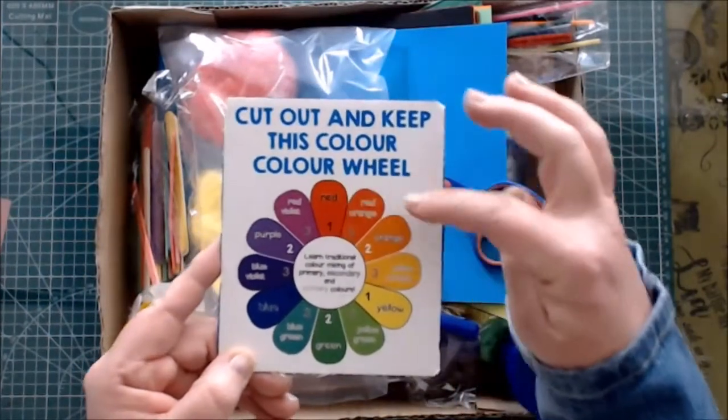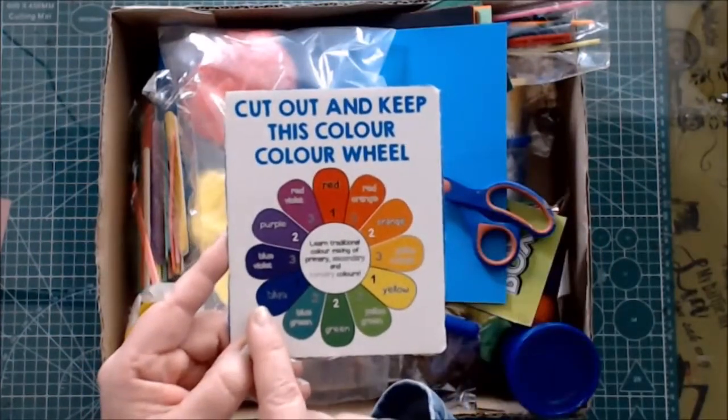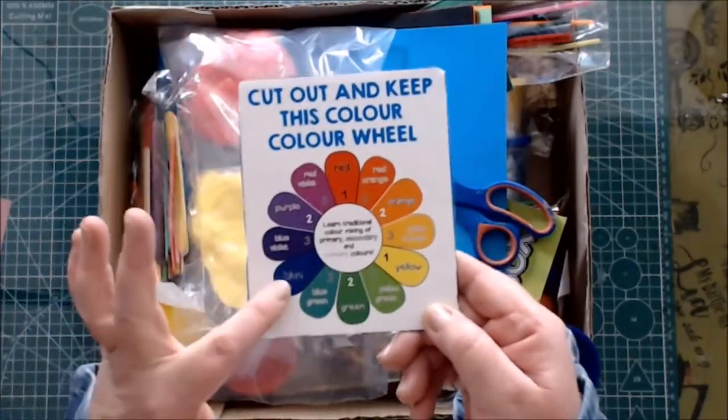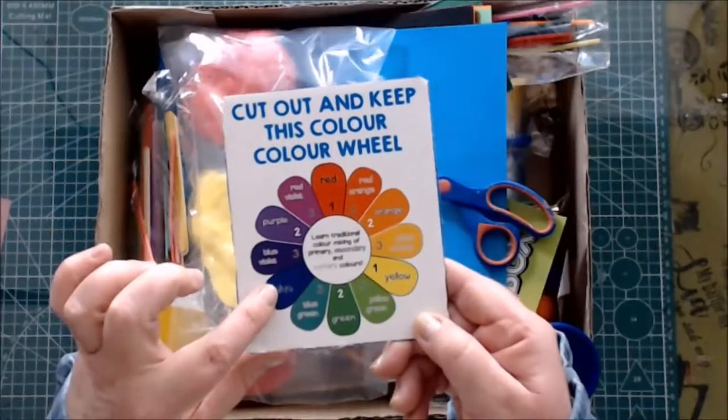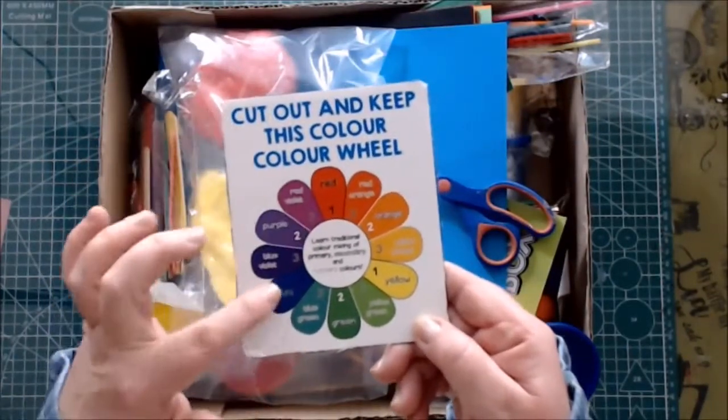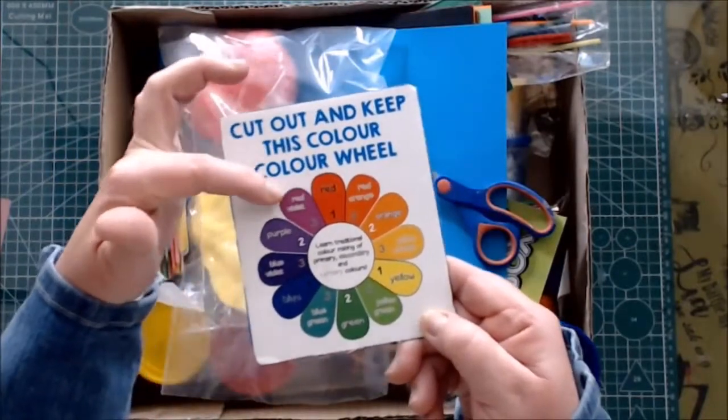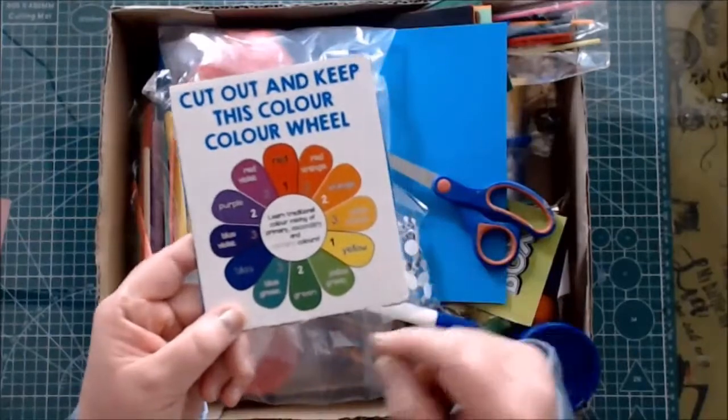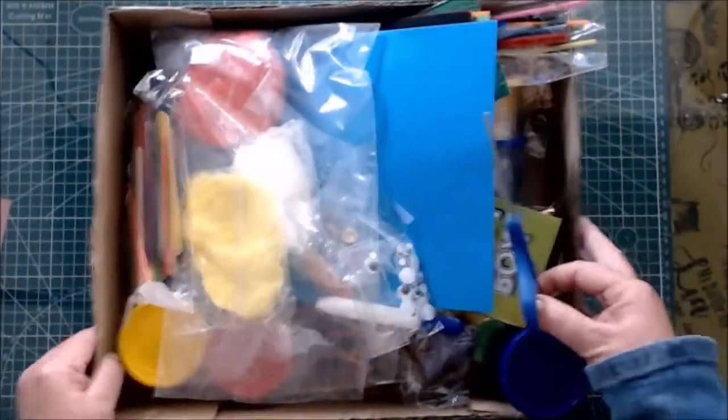If you mix yellow and red you get orange. If you mix yellow and blue you get green. If you mix red and blue you get purple. If you mix a little bit more blue than red you get a dark purple, and if you mix a little bit more red than blue you get a reddish purple. The same with the other colors.